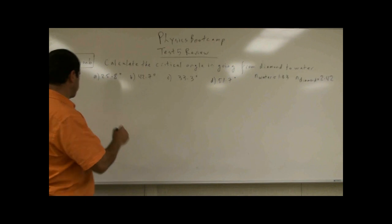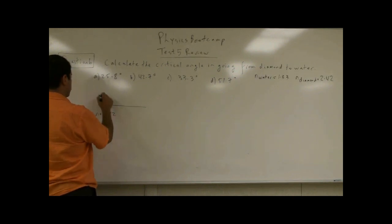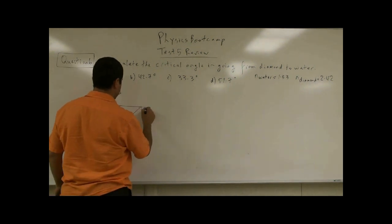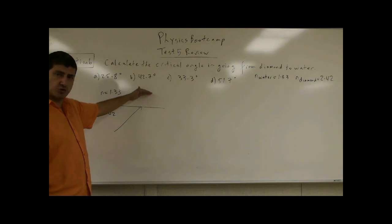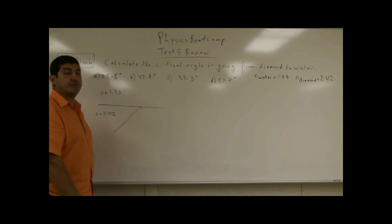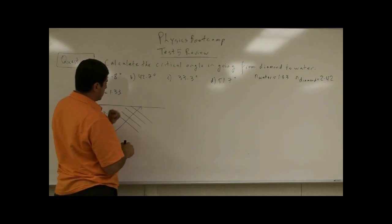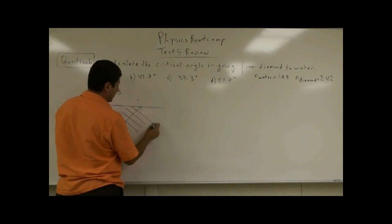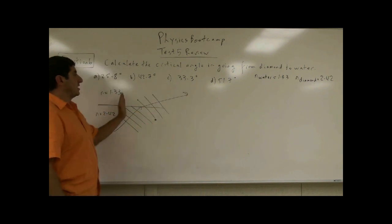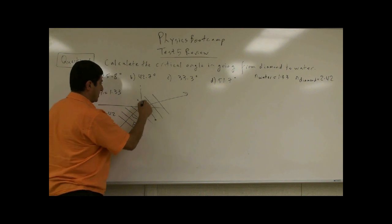The critical angle, by definition, is the angle at which, if you go from a heavier medium to a lighter medium — in this case from N = 2.42 to N = 1.33 — the light refracts into the lighter medium. The lighter medium is one with a lower index of refraction. Going from heavier to lighter, the speed of light increases. The wave front hitting the lighter medium speeds up while the part still in the heavier medium is still slow, so the beam bends away from the normal. This is the incident angle, and this is the refracted angle.